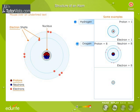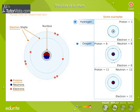If 11 protons, 11 electrons and 12 neutrons are present in an atom, it forms an atom of sodium.